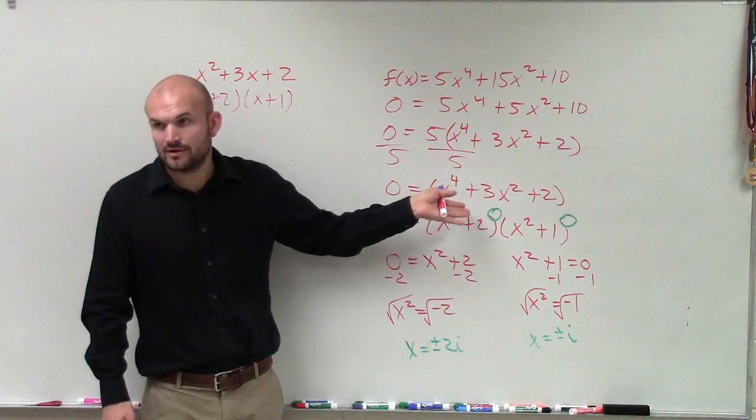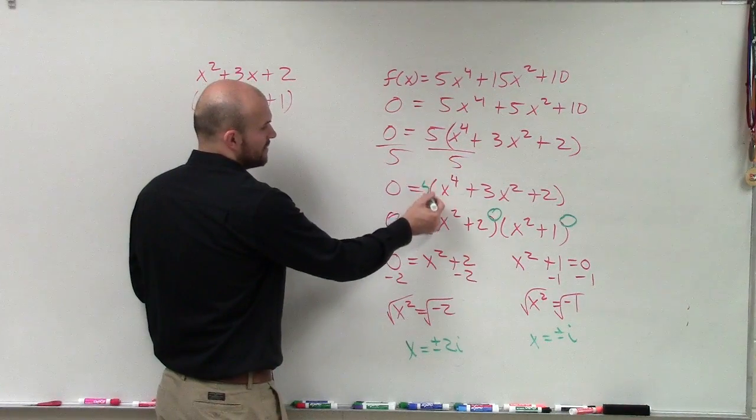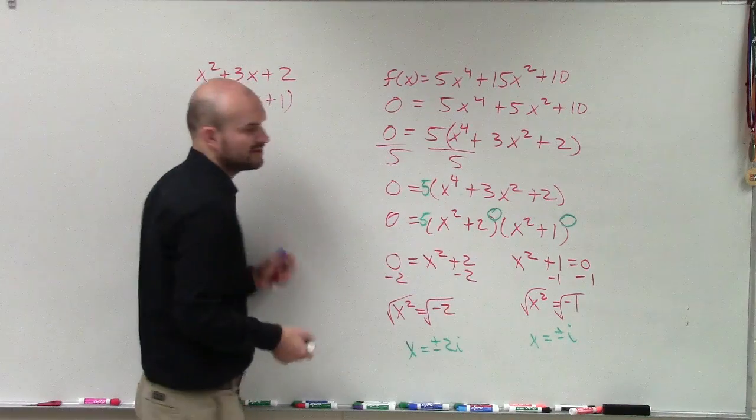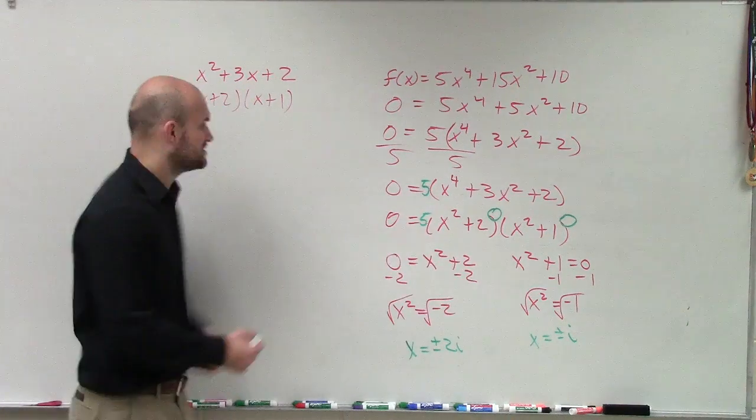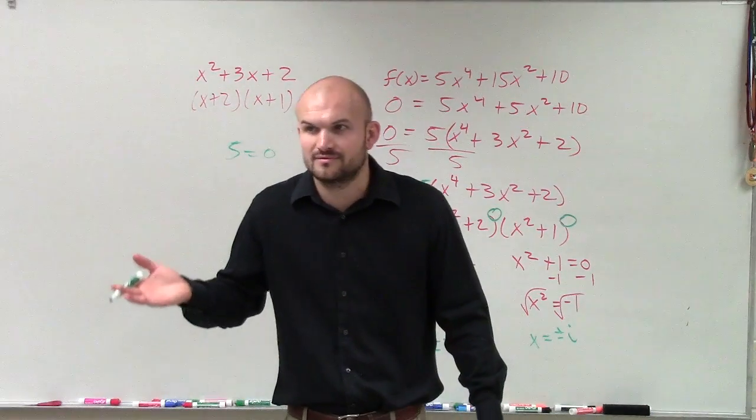But yeah, I mean, I can solve it out. But the thing is, when you guys do, if you don't want to divide it out, it's still right here. Right? But the thing is, you can't do zero product property and say 5 equals 0. That doesn't make sense, right? 5 doesn't equal 0.